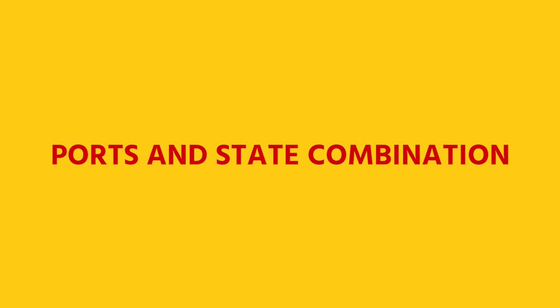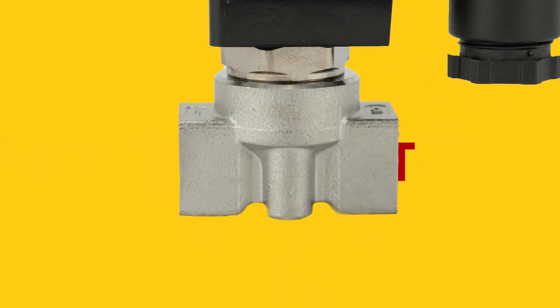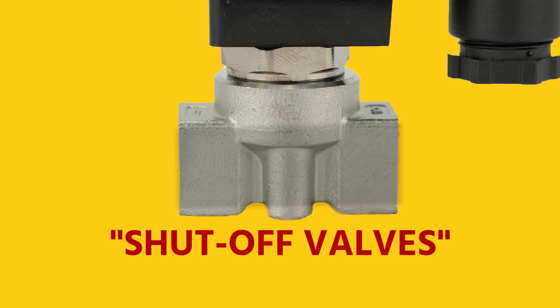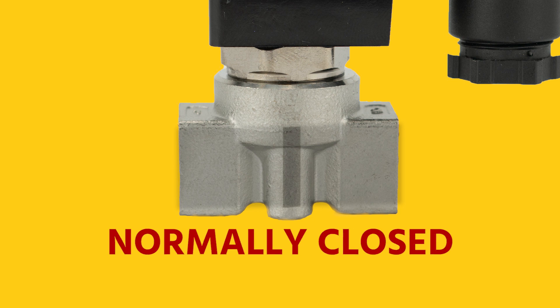Selecting the correct port and state combination can be hard, so let me explain the four most common used pneumatic solenoid valves. A two/two-way valve has two ports — in and out — and it has two states: open and closed. Two/two-way valves are therefore often called shut-off valves. They can be normally open or normally closed.